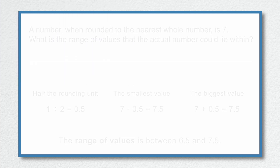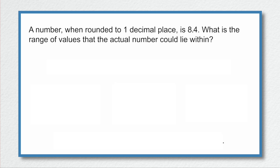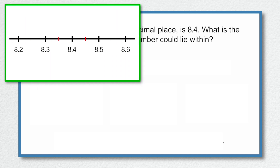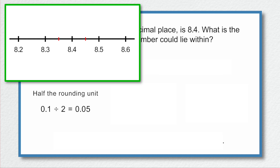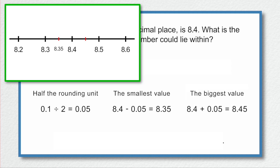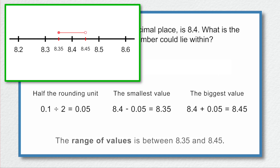The next example: a number when rounded to one decimal place is 8.4. The number line goes up in tenths, so we divide 0.1 by 2, giving 0.05. The smallest value is 8.4 subtract 0.05 = 8.35, and the biggest value is 8.4 add 0.05 = 8.45. So our range is 8.35 to 8.45.